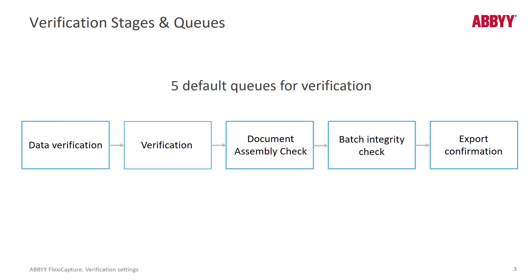Then we have the Document Assembly Check, which is very important if you've got a lot of multi-page document checks to do. That, however, can be done in the Verification Stage. The Batch Integrity Check queue relies on a Batch Integrity Script to be written, so that's used less frequently. And Export Confirmation happens right before Final Export.